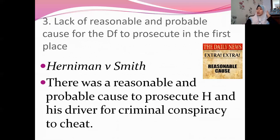On the same case, the third element — which is required to be fulfilled by the plaintiff — is that there must be lack of reasonable and probable cause for the defendant to prosecute in the first place. As far as Hanuman v Smith was concerned, the finding was that there was a reasonable and probable cause to prosecute Hanuman and his rival for criminal conspiracy to cheat.